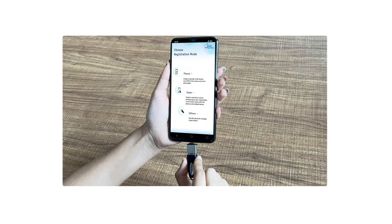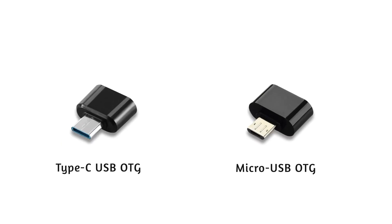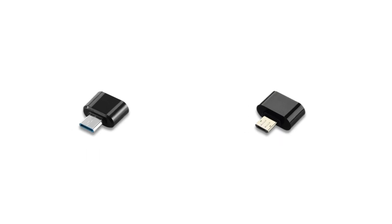You will need an OTG connector to connect your DSE token to your phone. Most phones come with the connector. If not, you can purchase one from an electronic store or order it online.